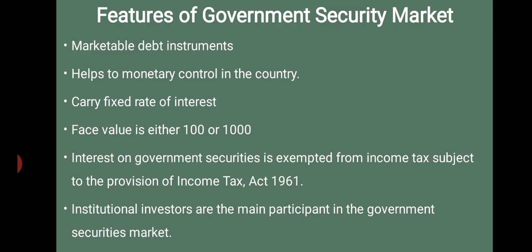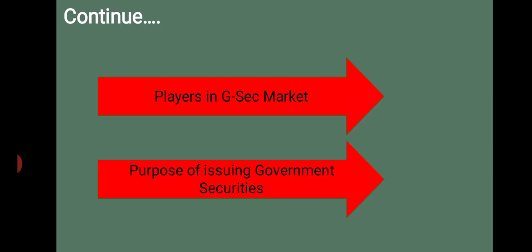Institutional investors are the main participants in the government securities market. Government securities are issued through the Public Debt Office of the RBI. There are no listing requirements for them. The government securities market is an over-the-counter market where there is direct one-to-one correspondence between the buyer and seller without using the services of brokers.